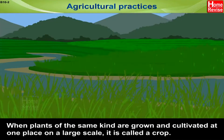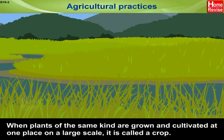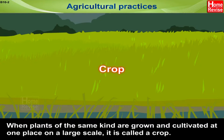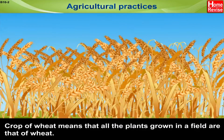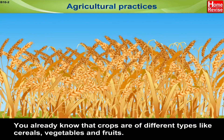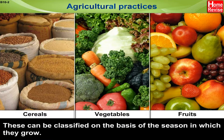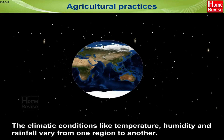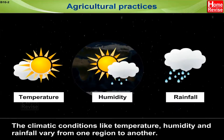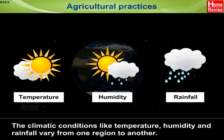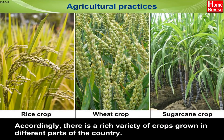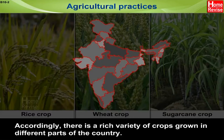When plants of the same kind are grown and cultivated at one place on a large scale, it is called a crop. For example, a crop of wheat means that all the plants grown in that field are wheat. Crops are of different types — cereals, vegetables and fruits — and can be classified on the basis of the season in which they grow. The climatic conditions like temperature, humidity and rainfall vary from region to region, resulting in a rich variety of crops grown in different parts of the country.